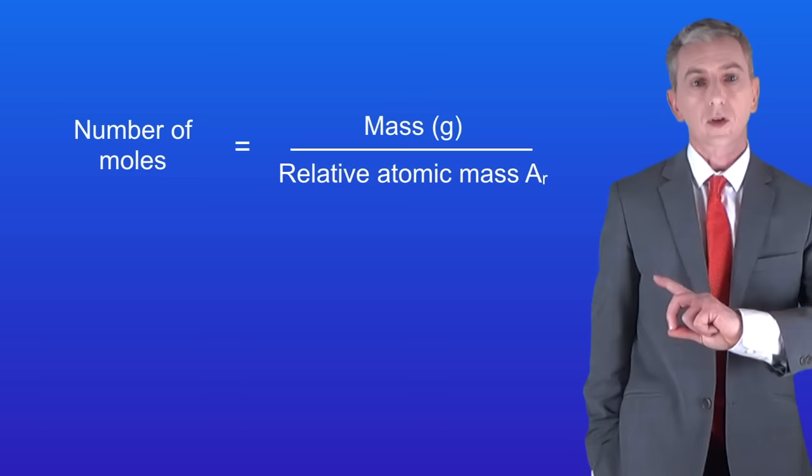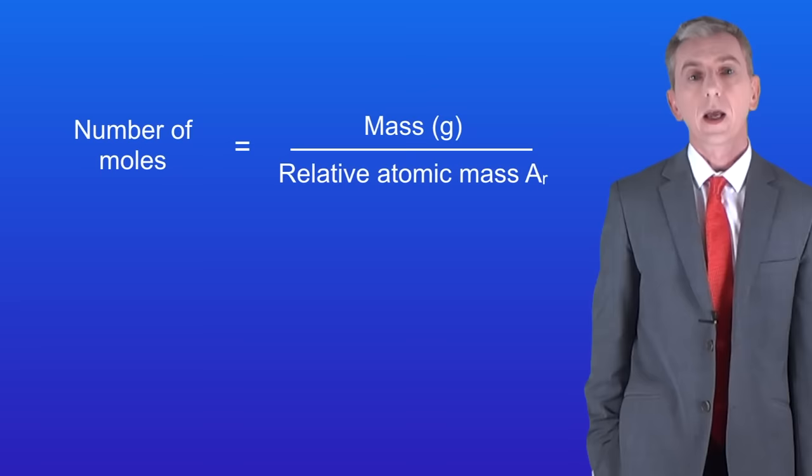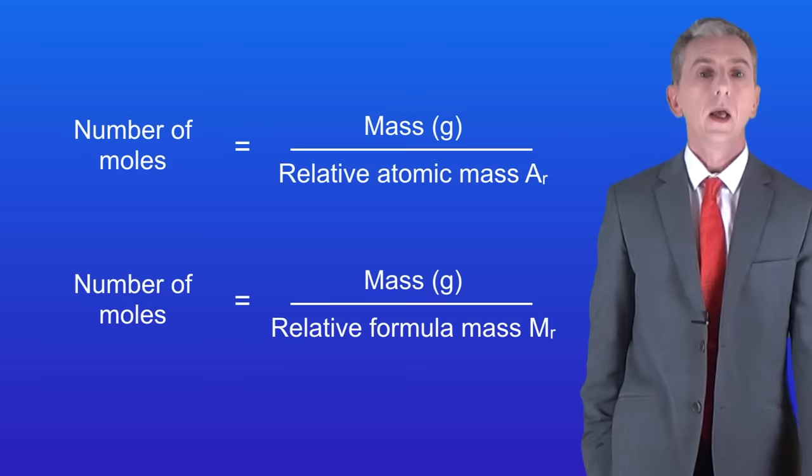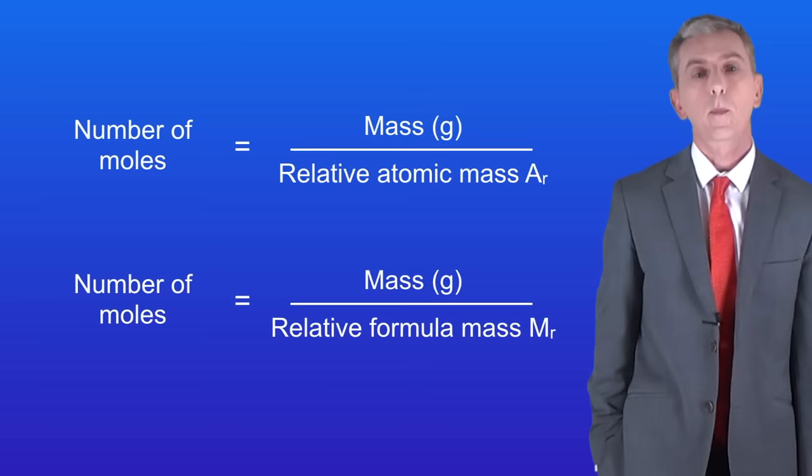First of all, remember that we calculate the number of moles using this equation. The number of moles is the mass of a chemical divided by the relative atomic mass. We use this equation when we're looking at elements. However, if we're looking at compounds then we use this equation, which is almost the same: the number of moles is the mass divided by the relative formula mass. If you cannot calculate relative formula mass, you should go back and watch my video on that topic before going any further with this video.